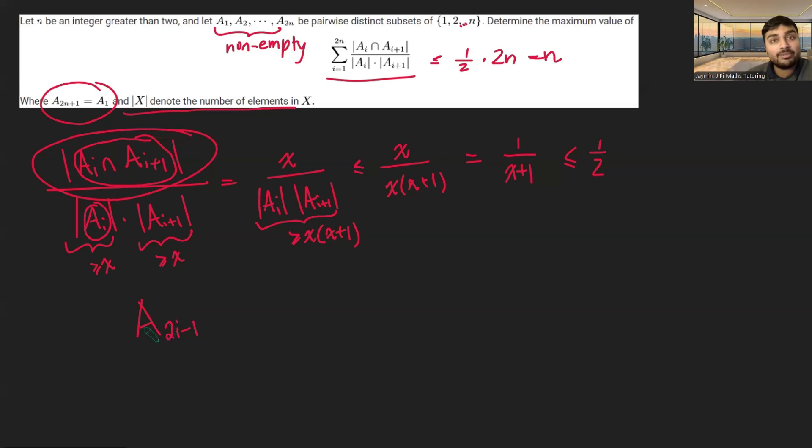So if we choose the odd number set, so a2i minus 1, to have just one element in, namely i, and the set a2i, so the even number set, to have the elements i and i plus 1 in, then both of these will satisfy the conditions. They're pairwise distinct.